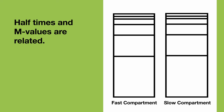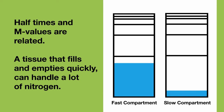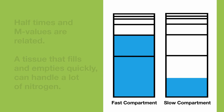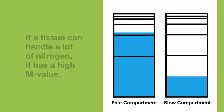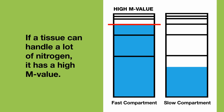First you must understand that half times and M values are related. Remember that a small half time means tissues fill up quickly and empty quickly, and that means it can handle a lot of nitrogen. If a tissue can handle a lot of nitrogen, it has a high M value — that is what an M value means.